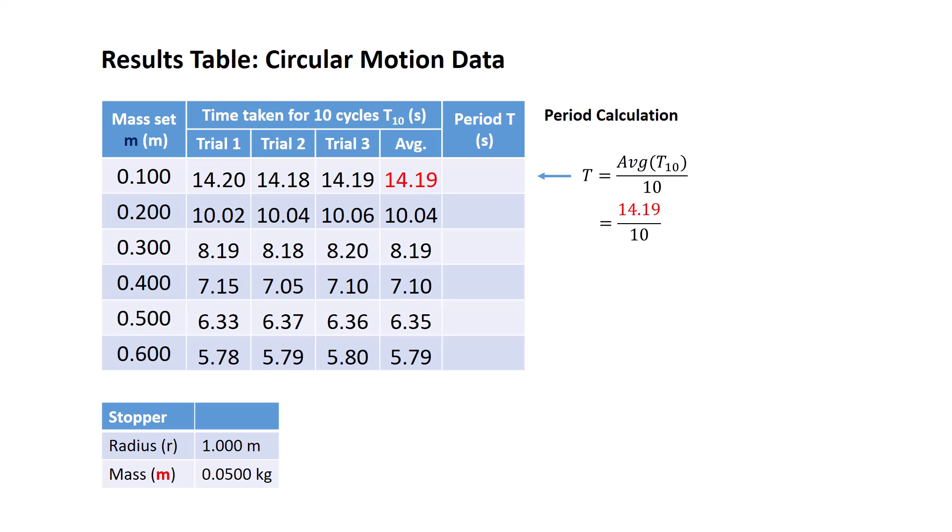In this first example for the 100 gram mass set, the average time for 10 cycles is 14.19 seconds. When I divide that by 10, I get 1.42 rounded to two decimal places, and perform the same calculations for each of the six mass sets.